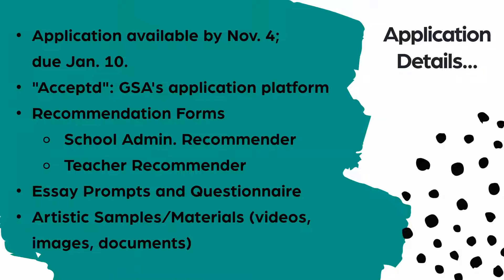The application for GSA 2021 will be available by November 4th and is due by end of day January 10th. You can start and stop the application as you please, saving your work along the way. When you click Apply Now on GSA's website, you'll be directed to GSA's application portal called Acceptd — a widely used application program for various art schools. You'll create a profile and proceed with your application. Acceptd has their own technology support team if you experience glitches. Note: the final E in the word is omitted in the platform's name.